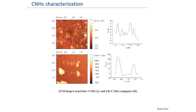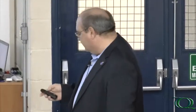Atomic force microscopy images of pristine carbon nanohorns and the fibrinogen–carbon nanohorn conjugate show that upon immobilization of the biomolecule, the size increases considerably to approximately 450 nanometers compared to the highly dispersed spherical pristine structures, demonstrating that the biomolecules were successfully attached to the carbon nanohorns.